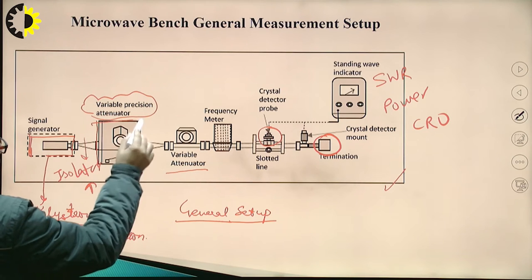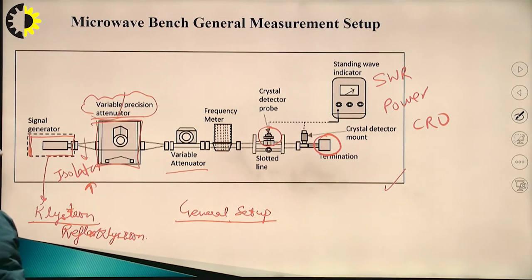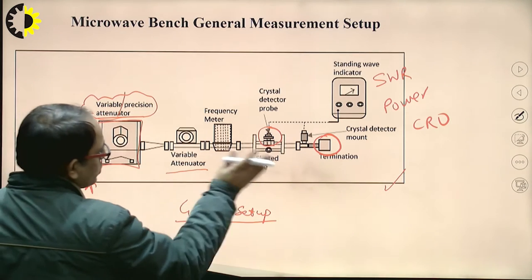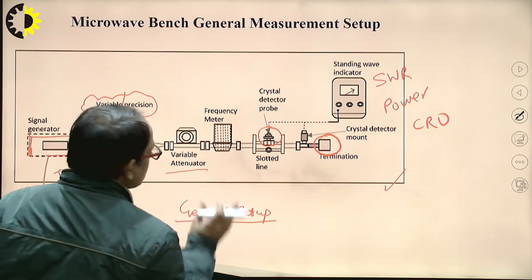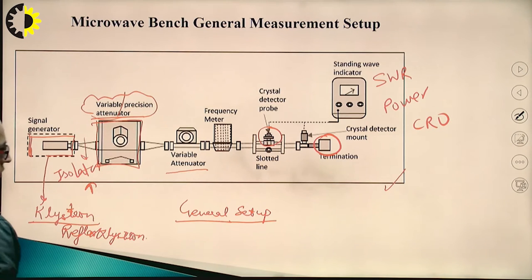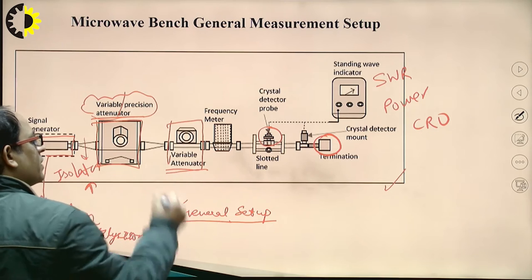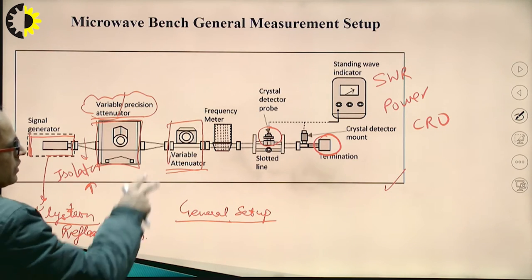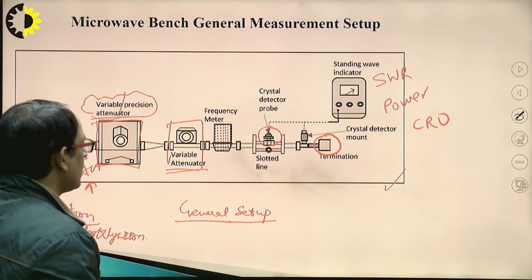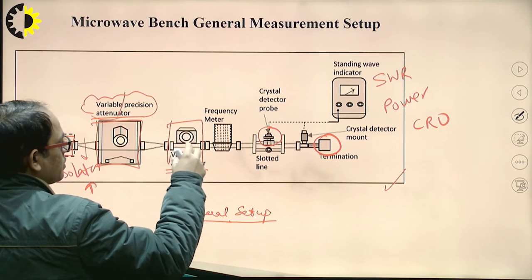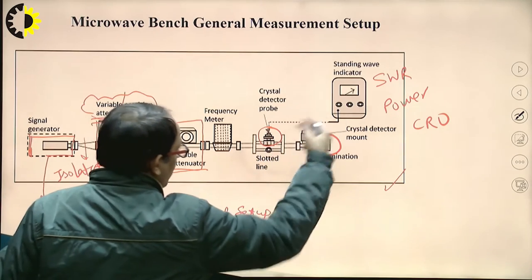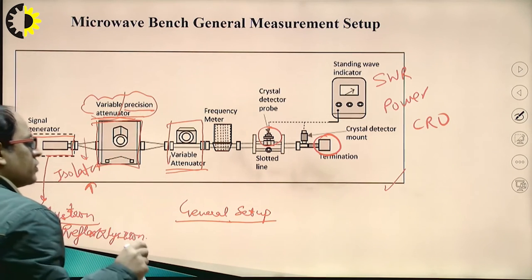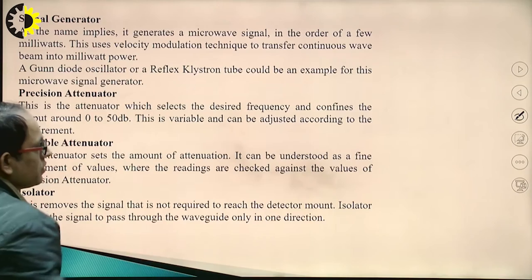The next device is a variable precision attenuator. This attenuator reduces the power going to the destination side. In a variable attenuator we cannot precisely set the amount of attenuation — we just vary it until the desired output is obtained. But in a precision attenuator, accuracy is higher. If I want to provide 20 dB of attenuation, I simply set it to 20 dB and it will provide exactly that attenuation.